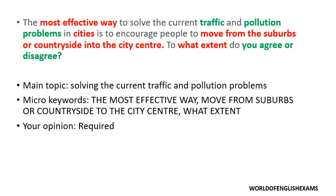The focus is on problems in cities — you're not going to talk about villages or the countryside. And what is the solution? It is to encourage people to move from the suburbs or countryside into the city center. I have seen students who did not read the question properly and thought that because cities are polluted and filled with traffic, people should be moved from the cities to the villages. But the question says it is vice versa — people have to be encouraged to move from the suburbs into the city center. Please focus on the direction — from where to where. That's very important.